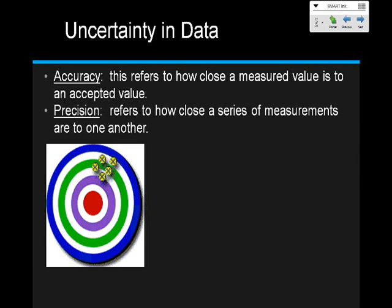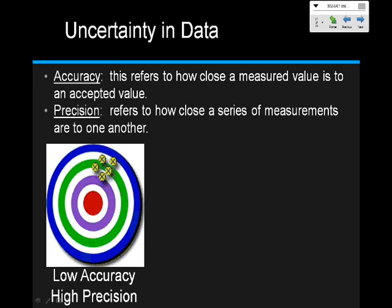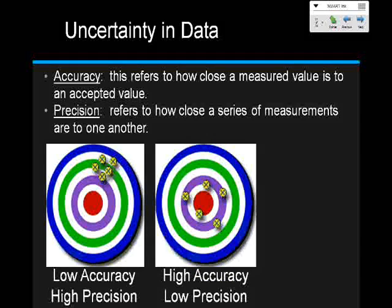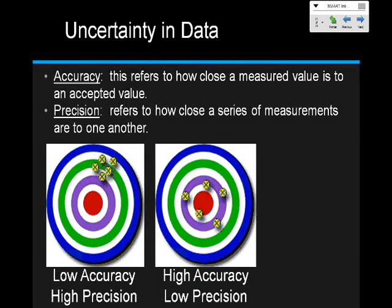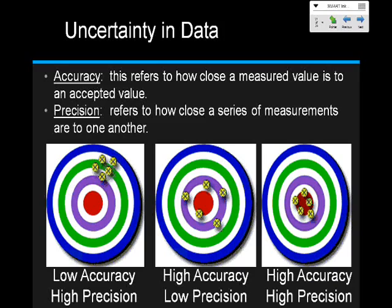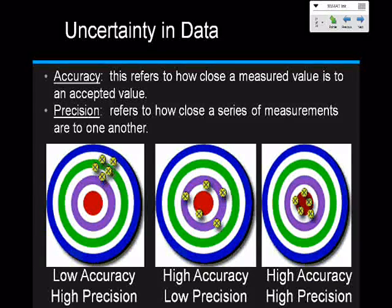Let's look at this as a dartboard. This first dartboard represents low accuracy because they're not near the bullseye, but high precision because they're all close to one another. The second dartboard shows high accuracy — all close to the middle — but low precision because the darts are not close to each other. The last dartboard shows high accuracy and high precision — all on the bullseye and all close to one another.